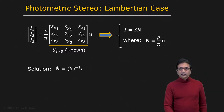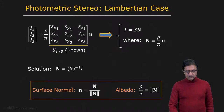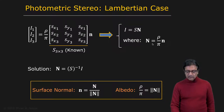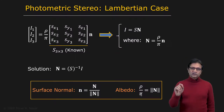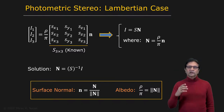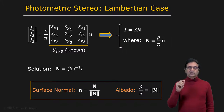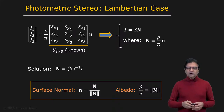What does N give you? N divided by the magnitude of N is the unit normal vector. And the magnitude of N equals albedo divided by pi. So with just three light sources and three corresponding images, we can figure out for a Lambertian object both the surface normal and the albedo at each point.